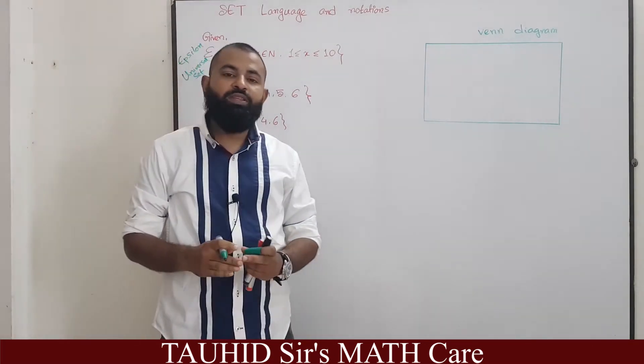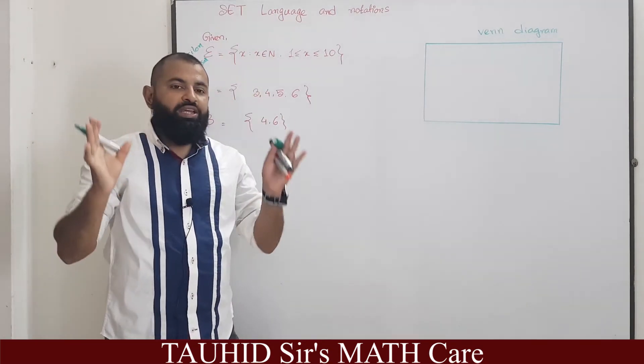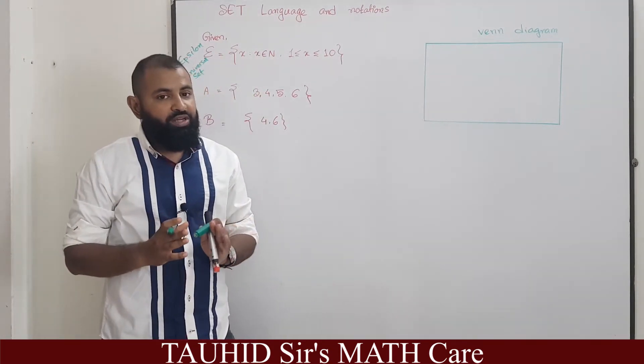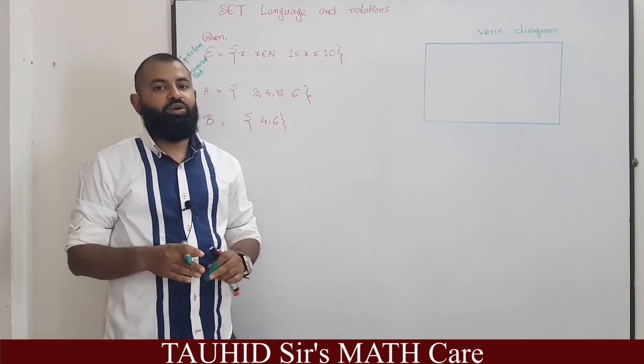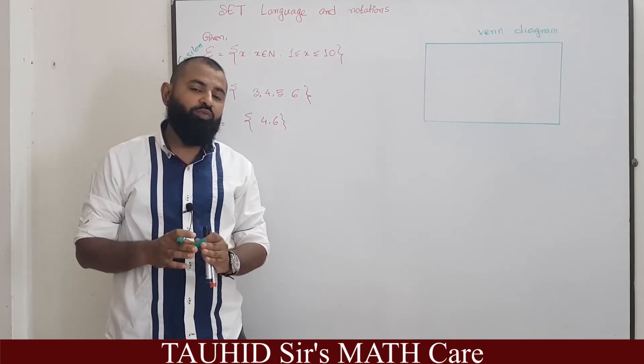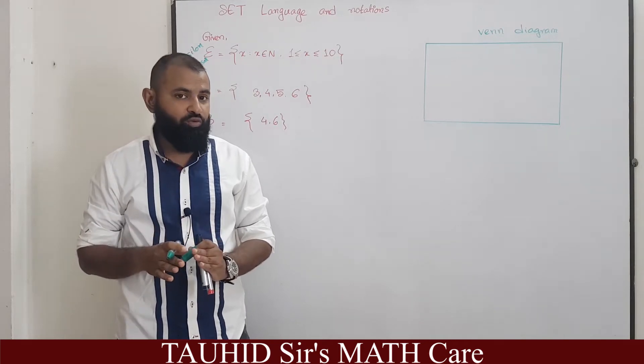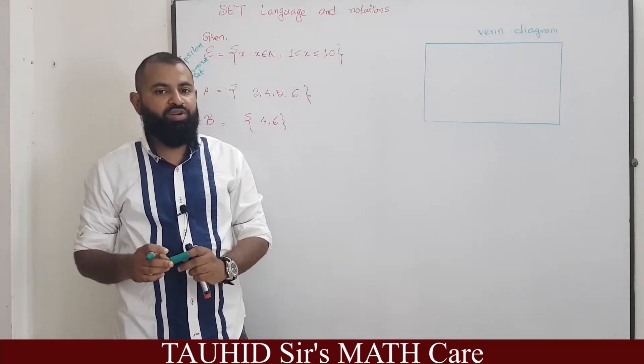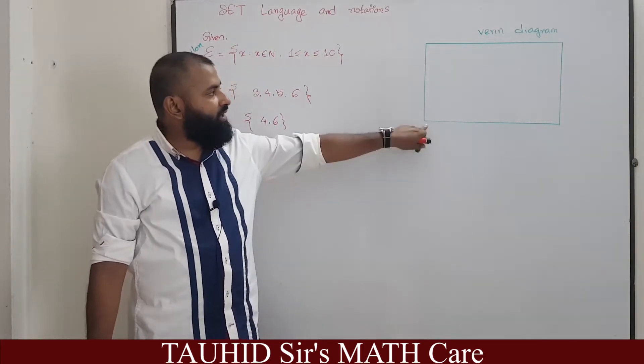Universal set means what? The total condition we are taking in consideration, the whole data set is called universal set or epsilon. The set of all values we are taking in account, that is called universal set.